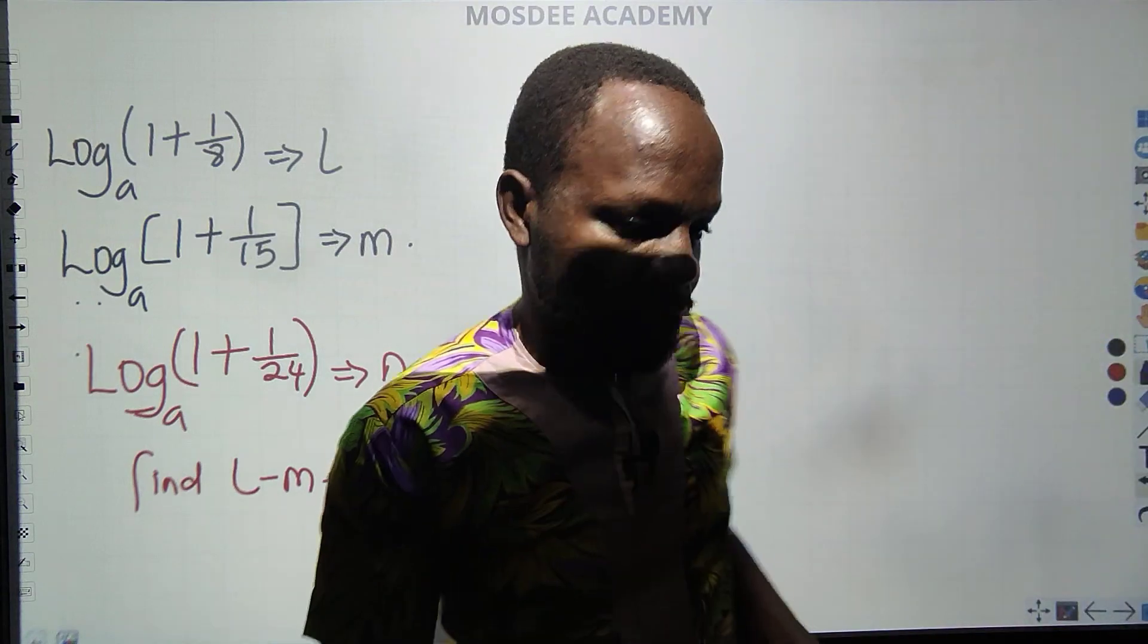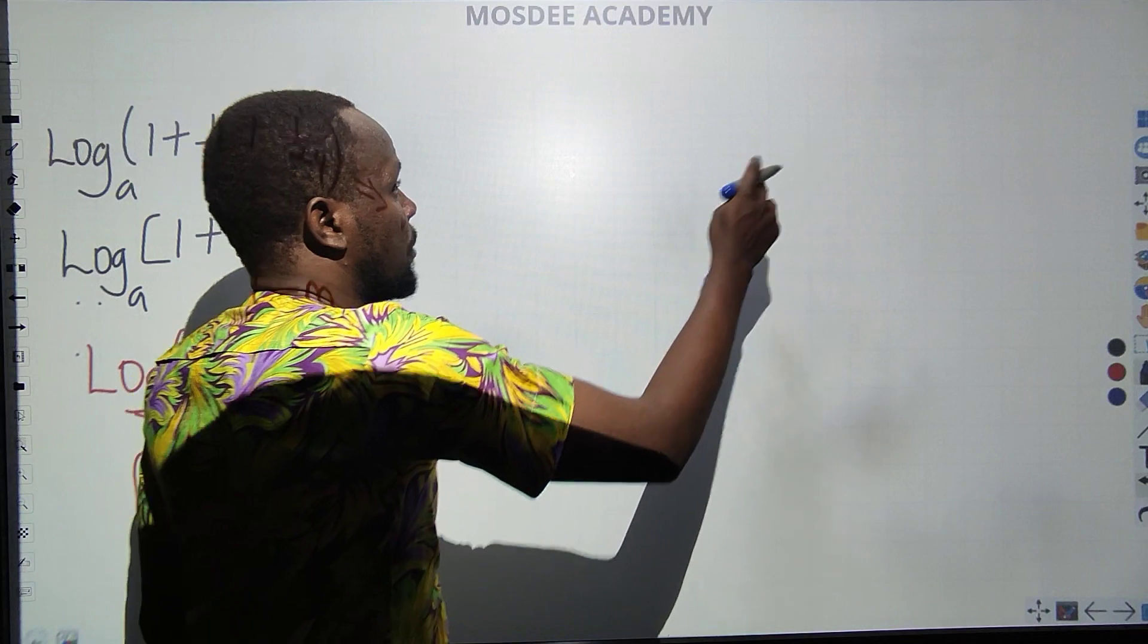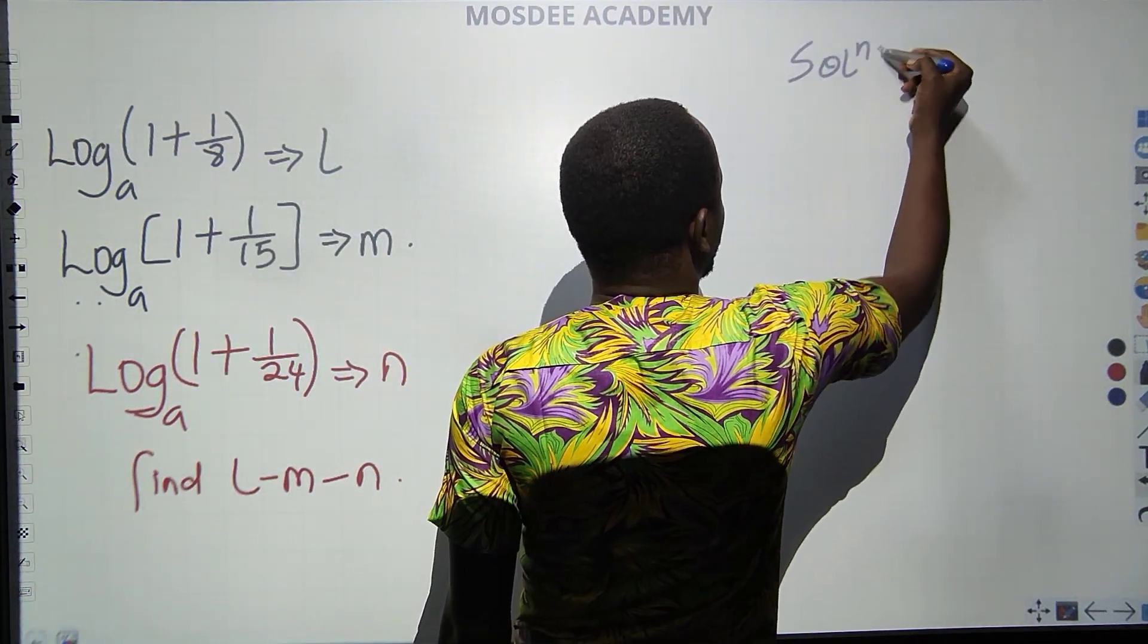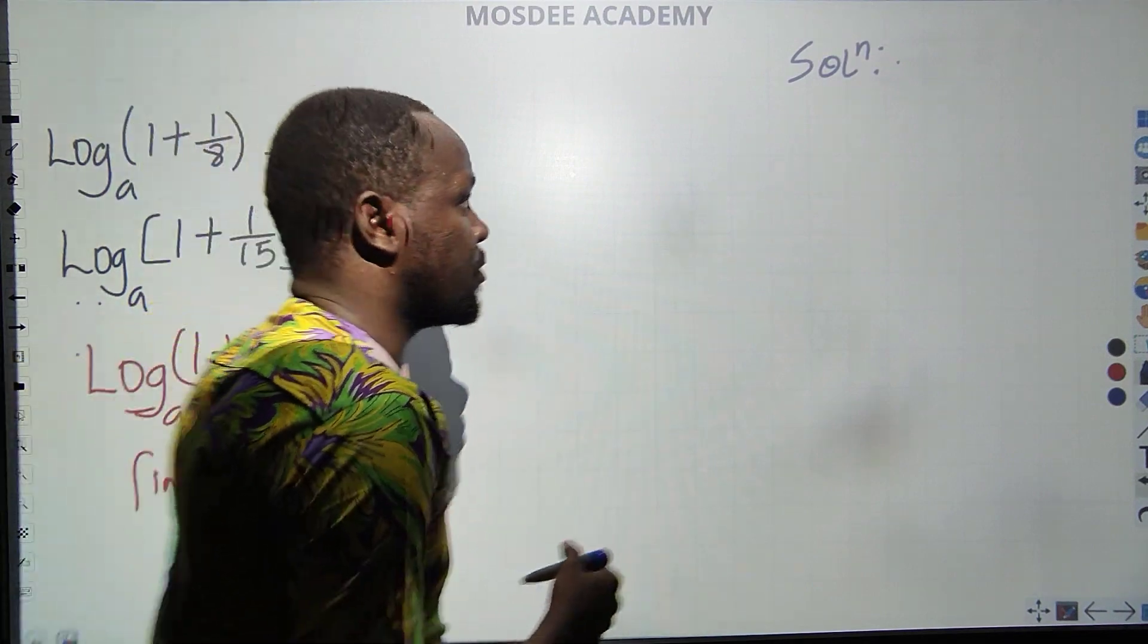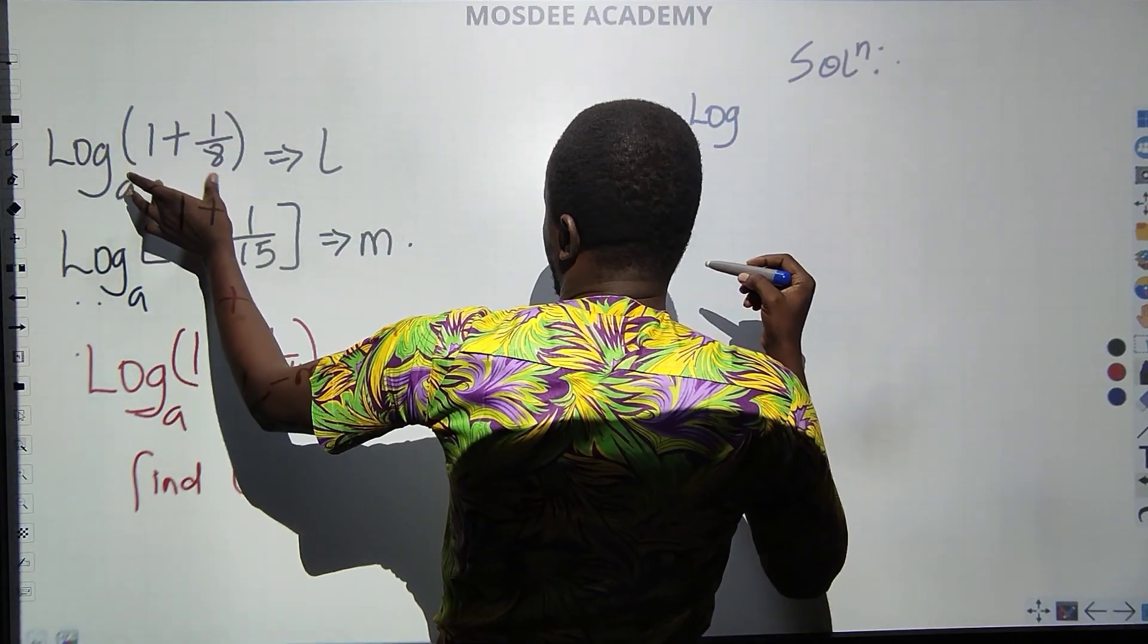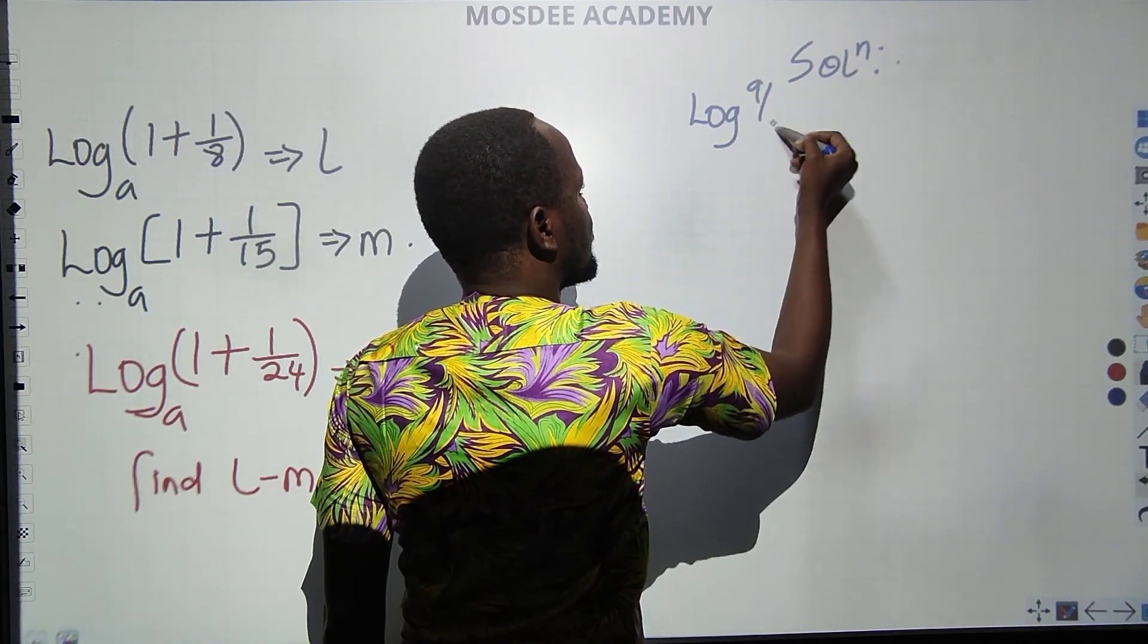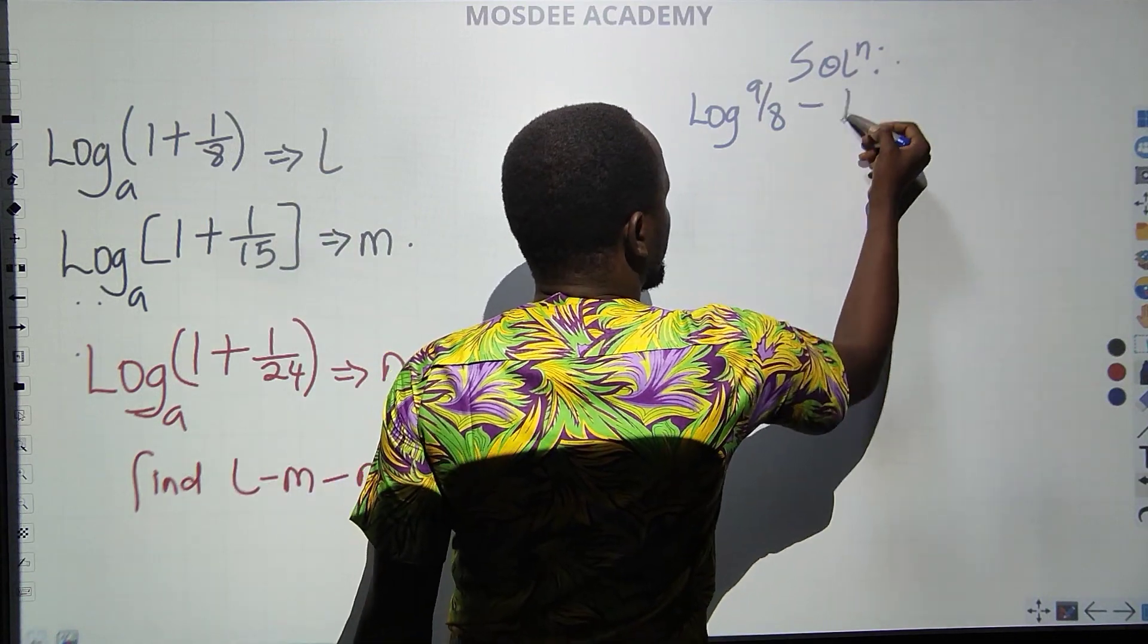So to solve this, now to begin with, we have the solution. I'm going to do that at this side. And to solve that, we are looking for L minus M minus N. So we can say log, I will turn these to improper fractions. 1 plus 1 over 8 is 9 over 8. Then I'm using, that is L minus, you can see, very simple question.